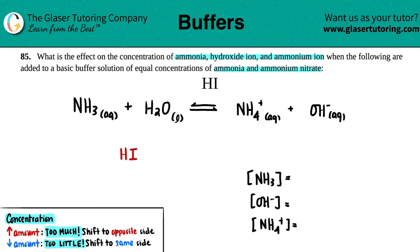HI is one of your six strong acids, so it will dissociate 100% into its two ions. The two ions come from the two elements — you're going to break off your H⁺ ion, giving you hydronium ion, and the iodide ion (I⁻).